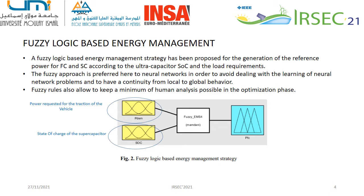The Mamdani Fuzzy system defines a function F that generates numerical outputs U from input values X. The trapezoidal membership functions and centroid defuzzification methods are adopted. This method determines the center of area of the Fuzzy Logic set and returns the corresponding crisp value.